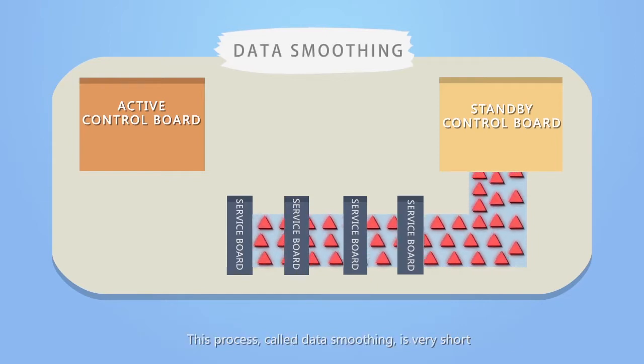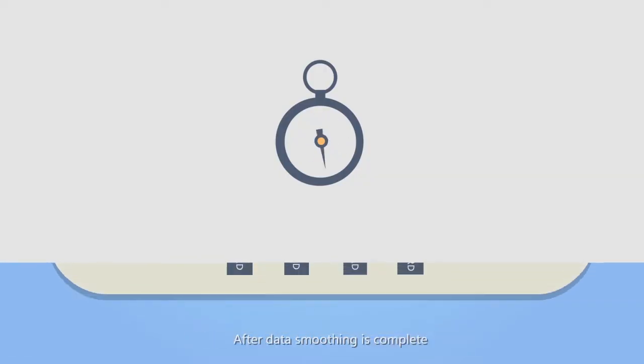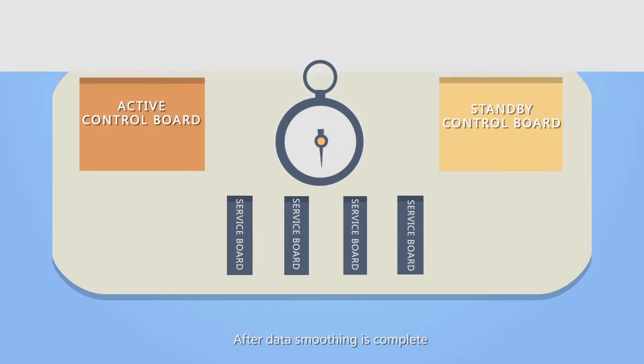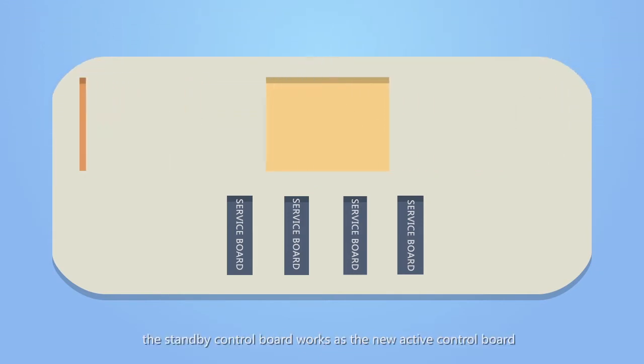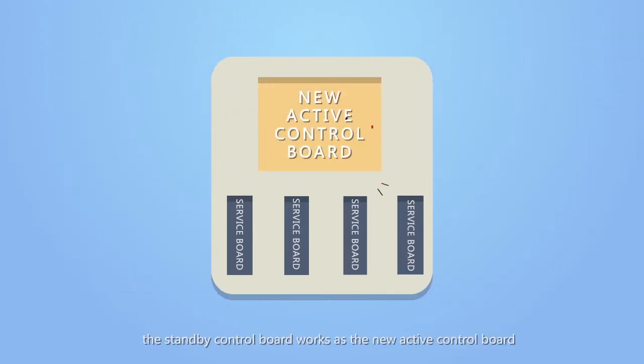This process, called data smoothing, is very short. After data smoothing is complete, the standby control board works as the new active control board.